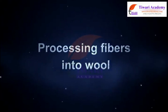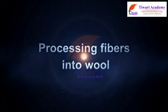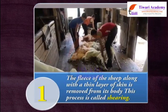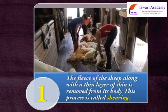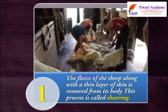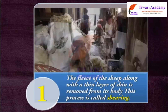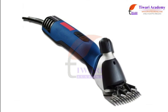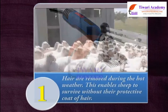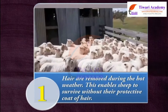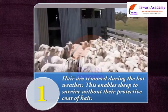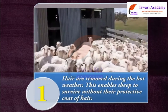Processing of fibers into wool. Step 1: The fleece of the sheep along with a thin layer of skin is removed from its body. This process is called shearing. Machines similar to those used by barbers are used to shave off hair. Usually, hair is removed during hot weather, which enables sheep to survive without their protective coat of hair.